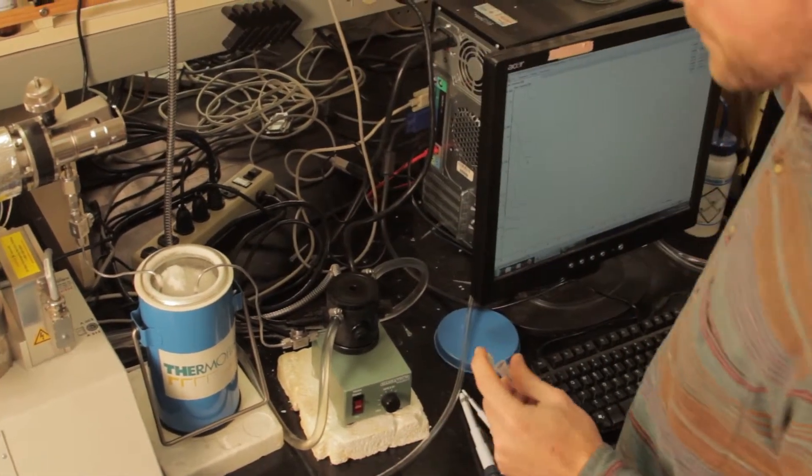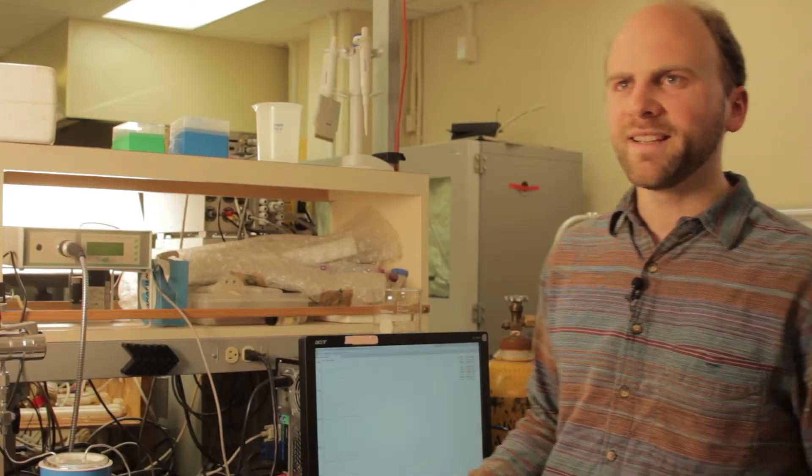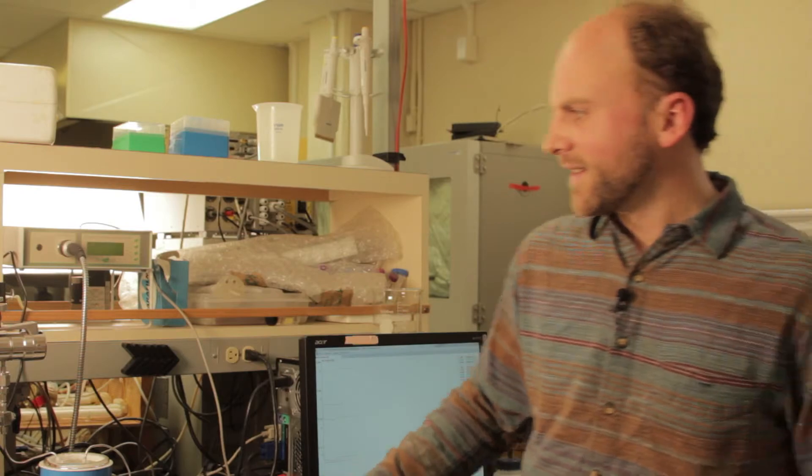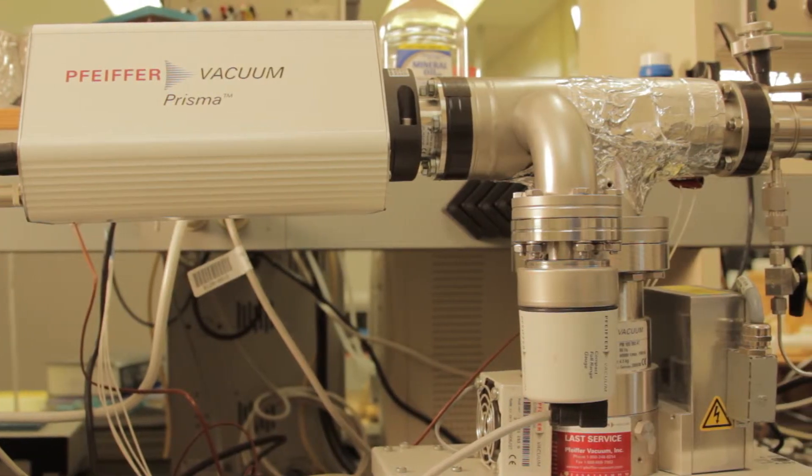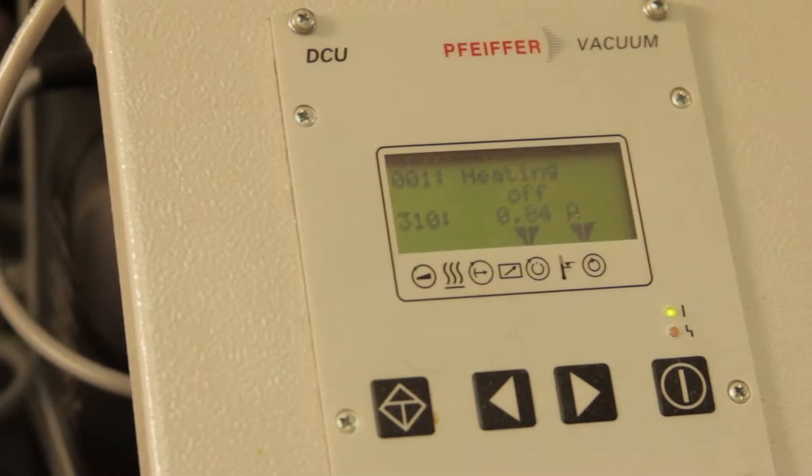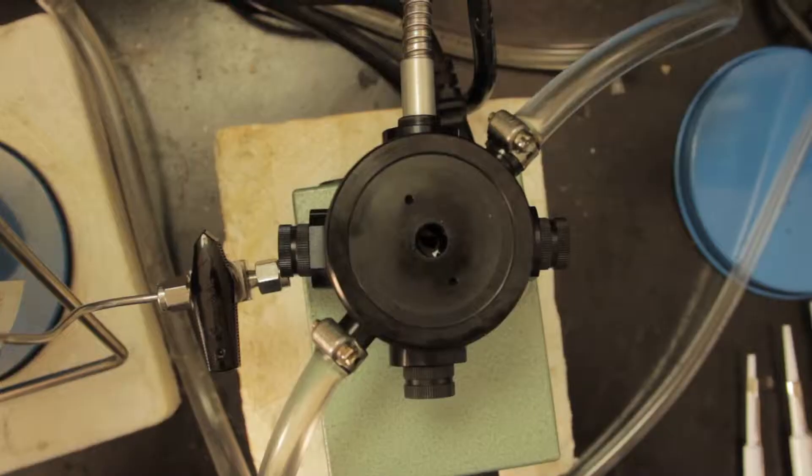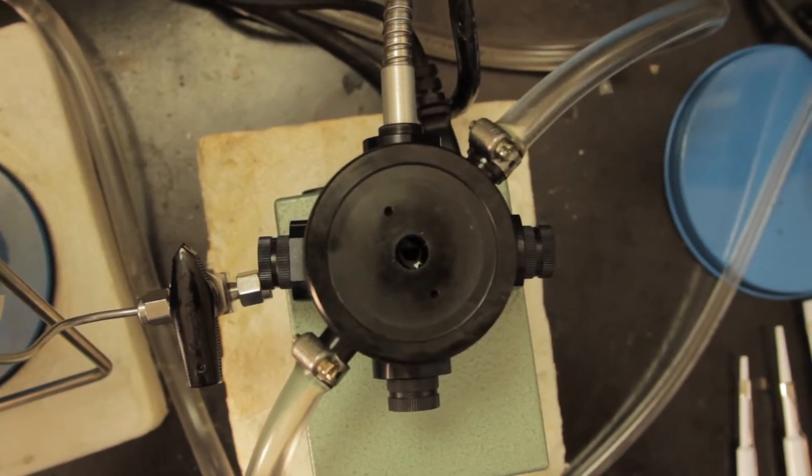And what I'm doing today is a fairly routine test of hydrogen production using this interesting-looking machine, which is a vacuum chamber and a mass spectrometer. What's going on here is the cells are in this little chamber. I put them in there in the dark and then track hydrogen production when I turn the light on.